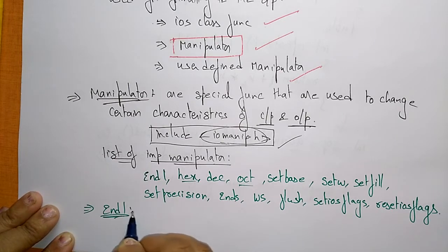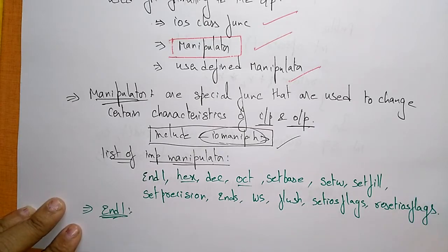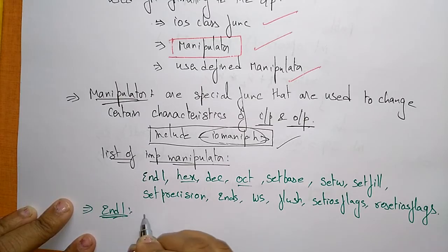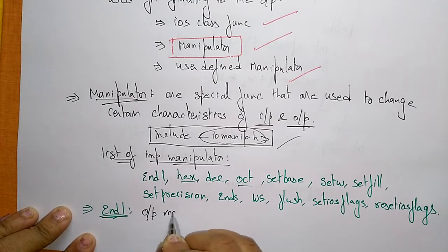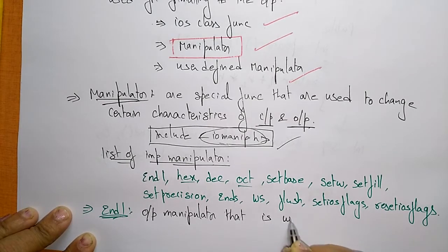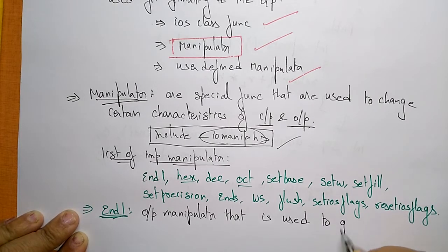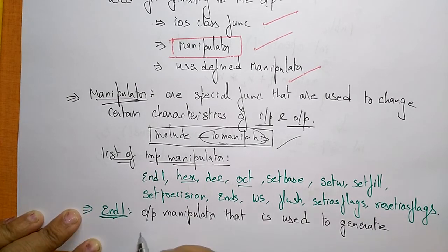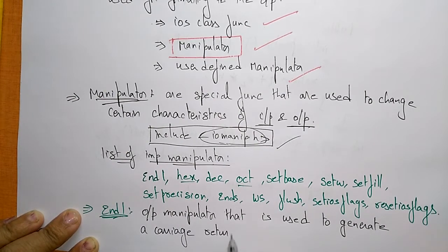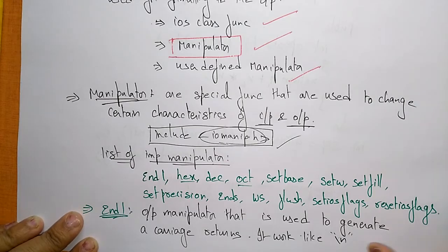The first manipulator is endl. This is an output manipulator that is used to generate a carriage return — meaning it moves to the next line. It works just like \n, which is the newline character.